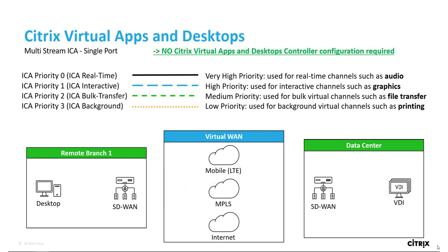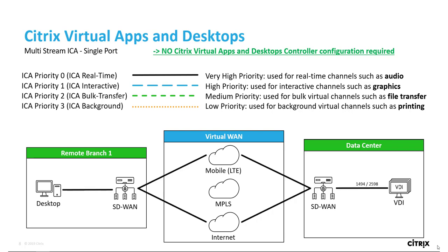With multi-stream ICA single port — with no configuration changes on the delivery controller or network equipment — the controller will send all traffic on port 1494 or 2598. Then the SD-WAN appliance will identify the class of service by inspecting an uncompressed virtual channel in the HDX protocol called the NSAP channel. With this knowledge, it will break out real-time traffic and, based on real-time quality of service conditions, route it accordingly, and also break out interactive, bulk transfer, and background traffic and route it accordingly as well.